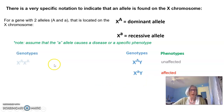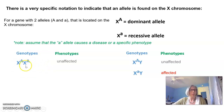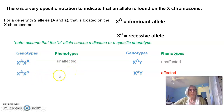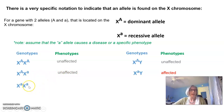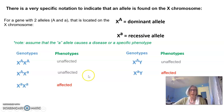In females or egg-producing individuals, it's very different — they have two X chromosomes. A female can be homozygous dominant and of course be unaffected. They can be heterozygous, and again their phenotype would be unaffected. They could also be homozygous recessive, and in this case they would be affected because both of their alleles on the X chromosome are the lowercase affected allele.